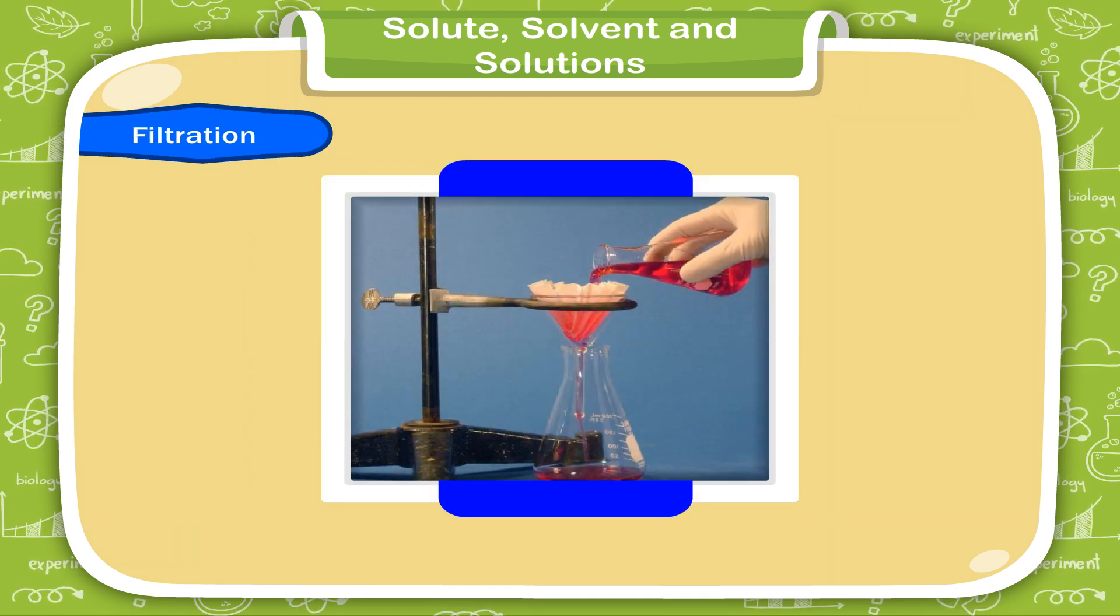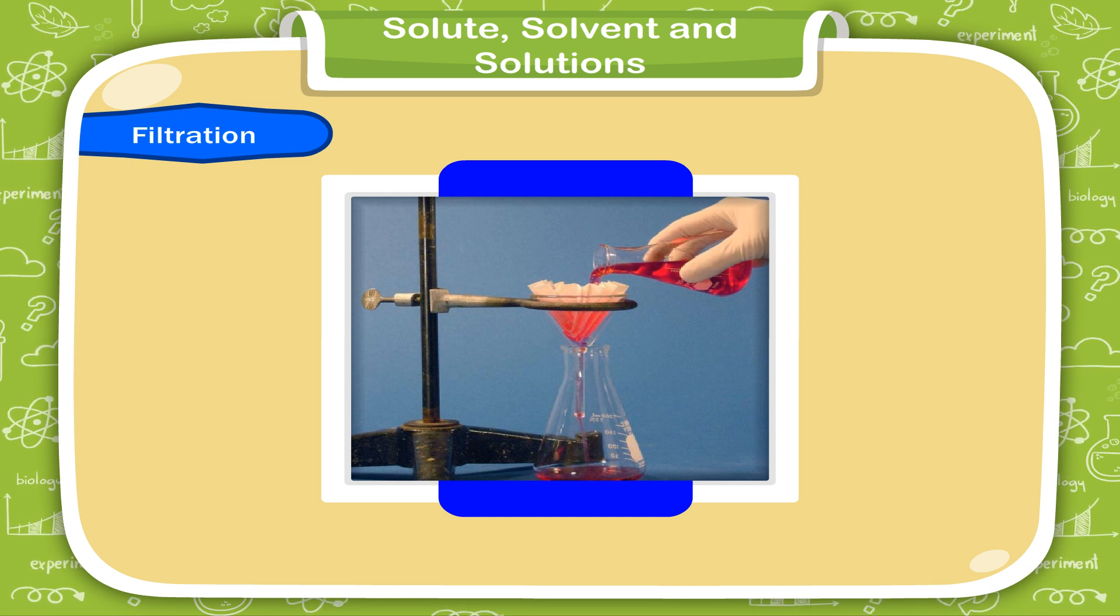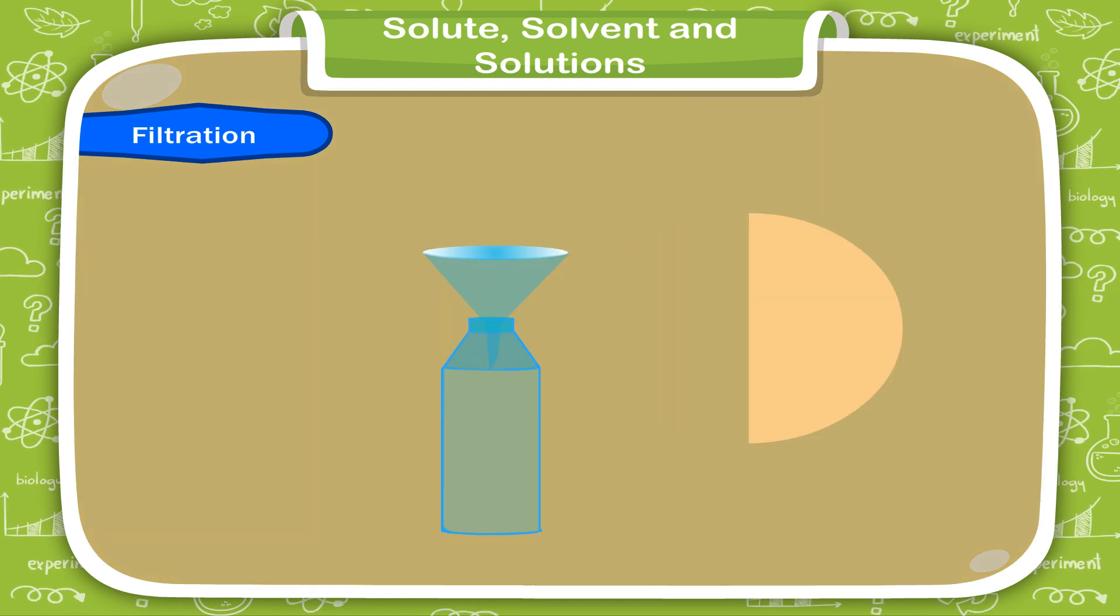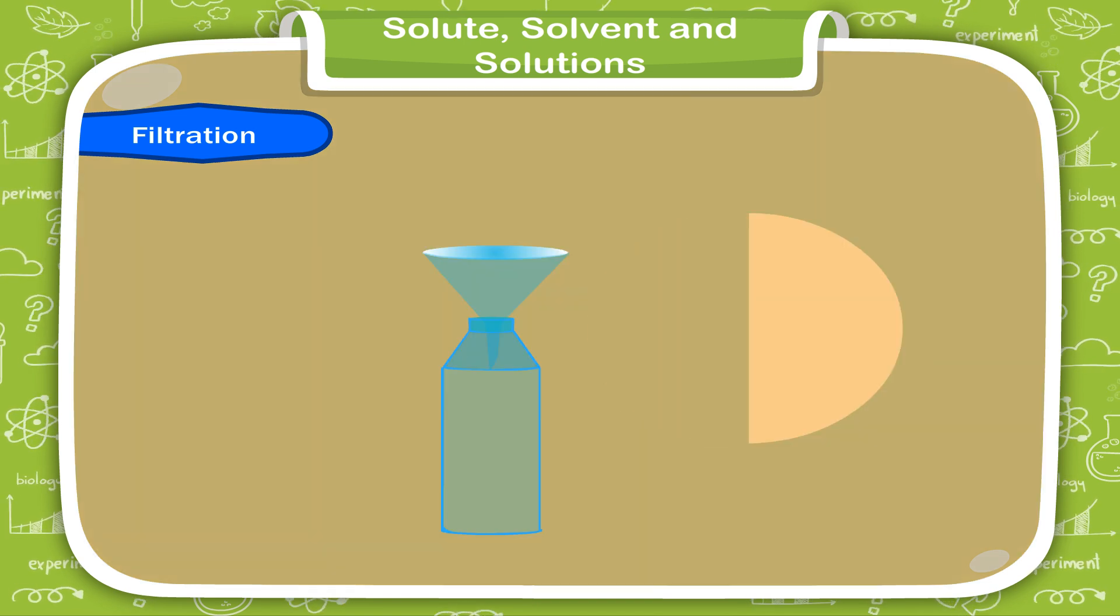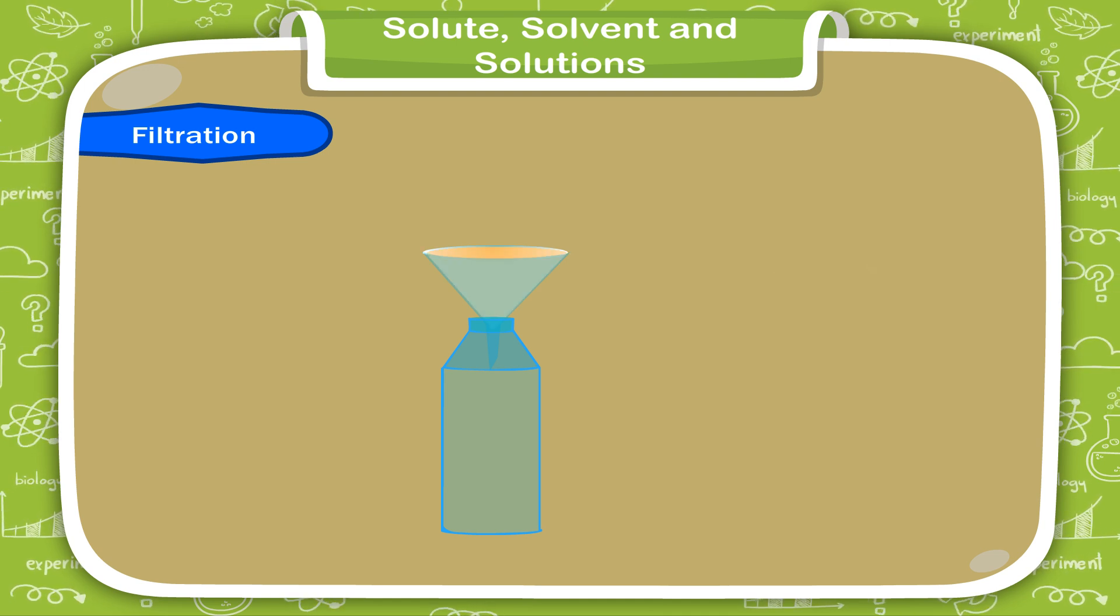Filtration. Insoluble impurities can be removed by the process of filtration. Fold a sheet of filter paper into half and then into quarters, as shown in the figure. It takes the shape of a cone when we open it. Place it in a funnel, as shown in the figure.